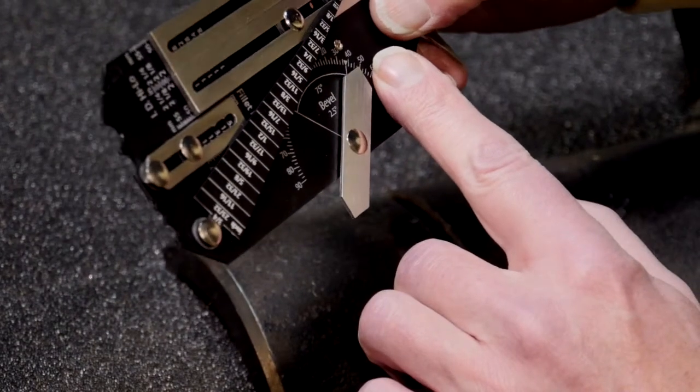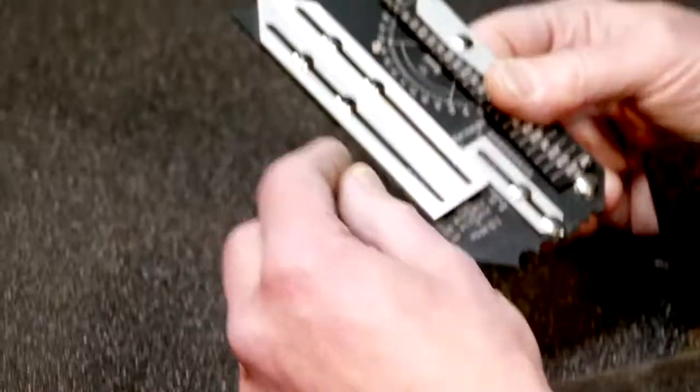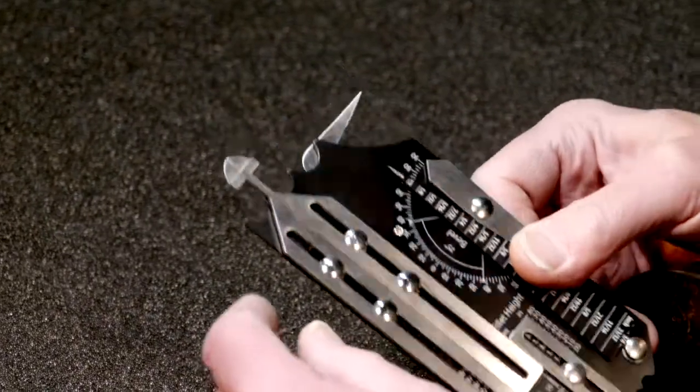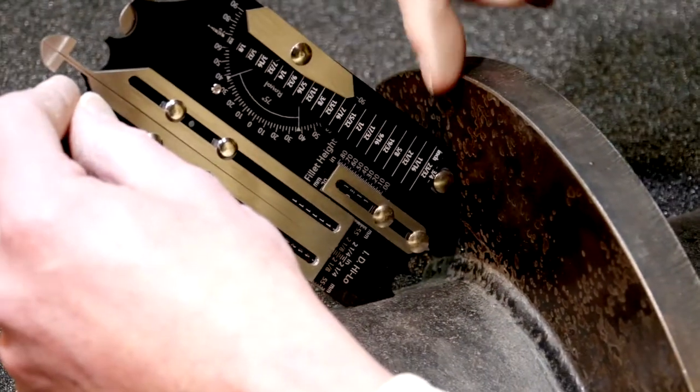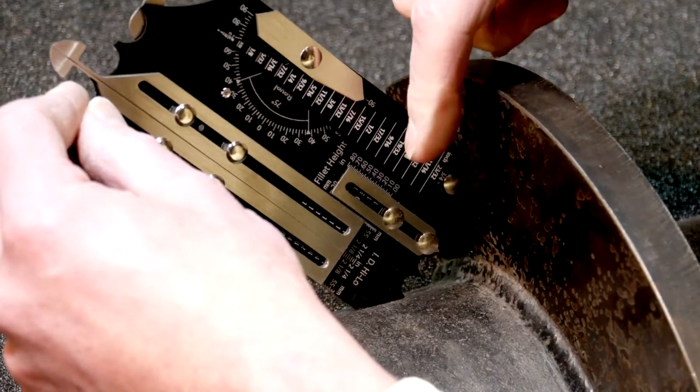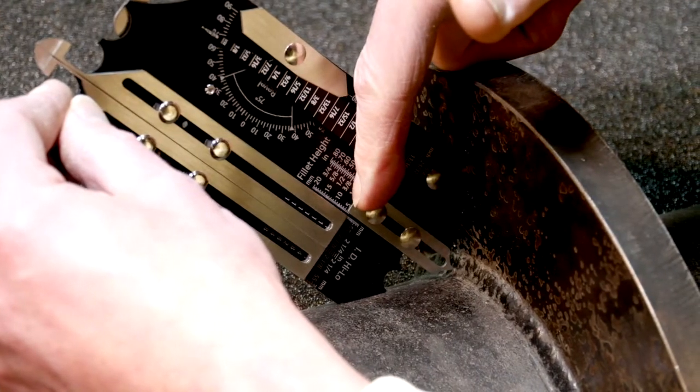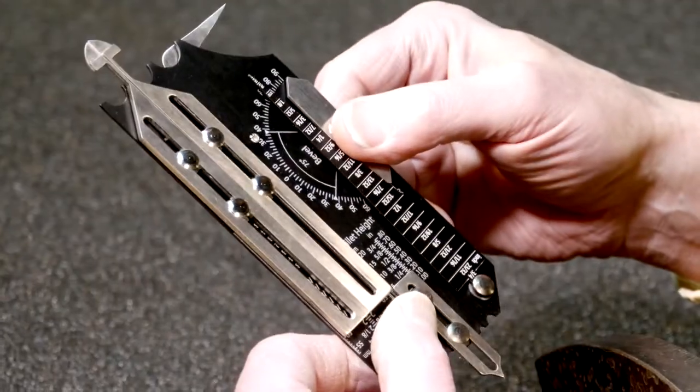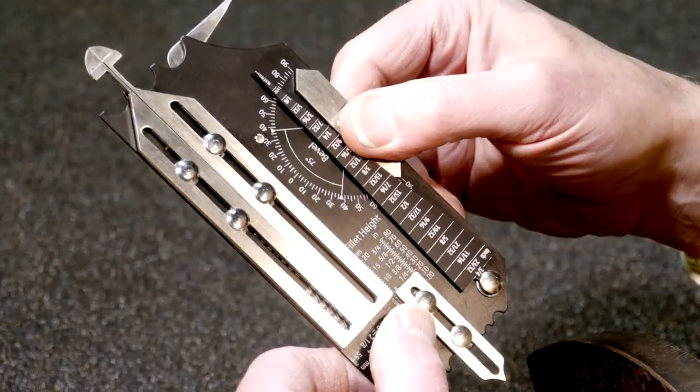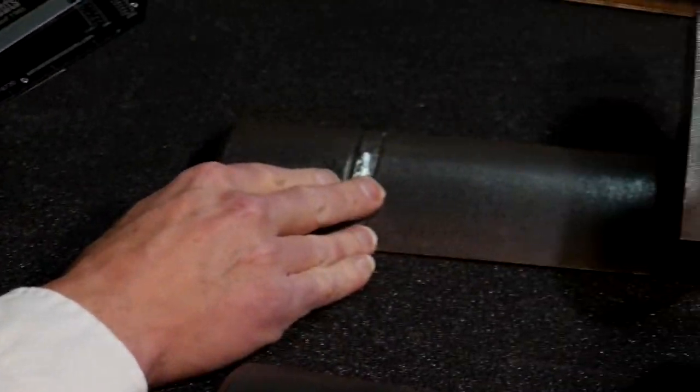Now we're going to measure fillet weld throat height. I'll take the gauge and place the 90 degrees on the weld. Both these surfaces are sitting flat. Come in with my pointer and measure off directly at about 19 millimeters.